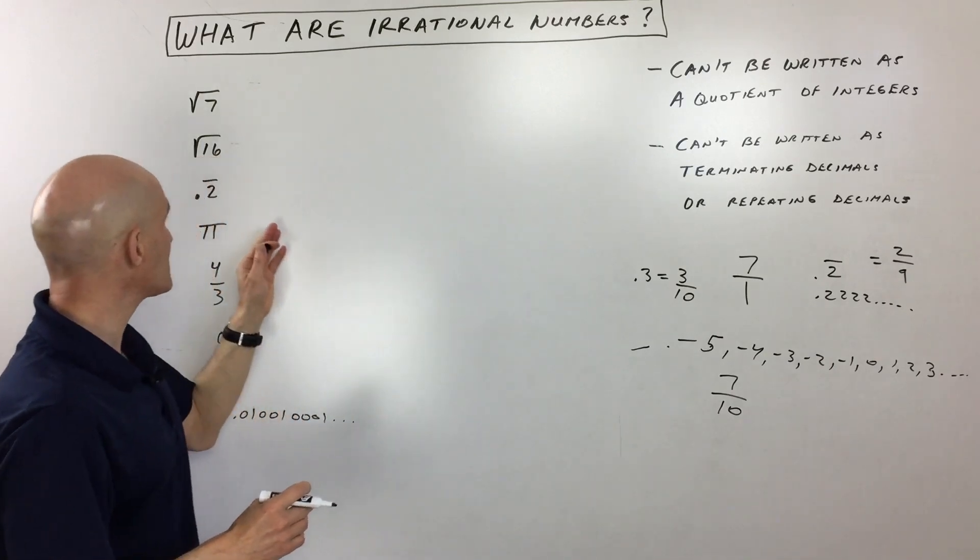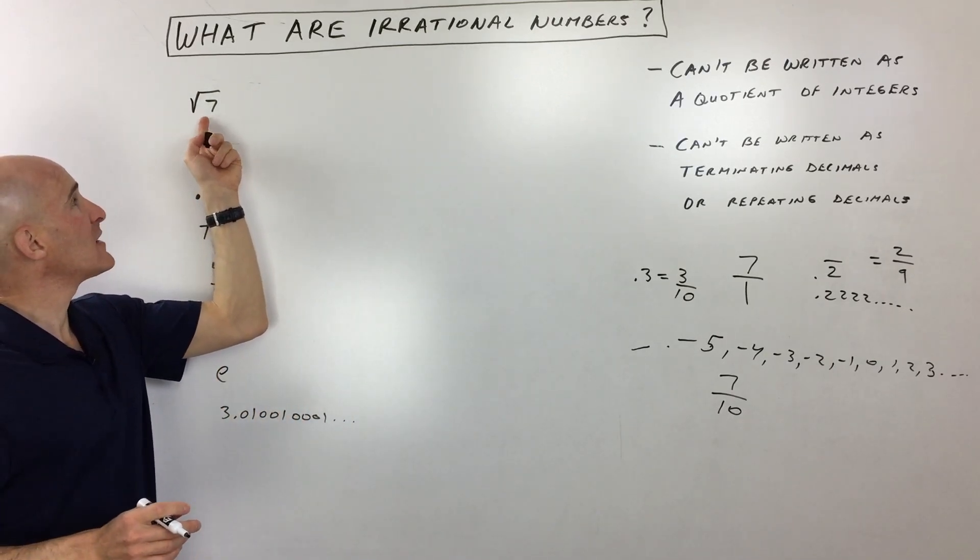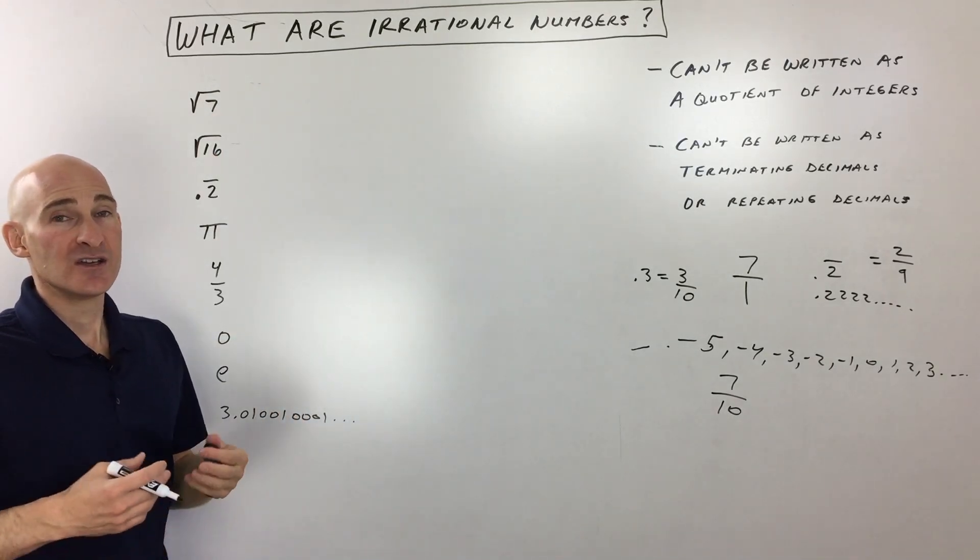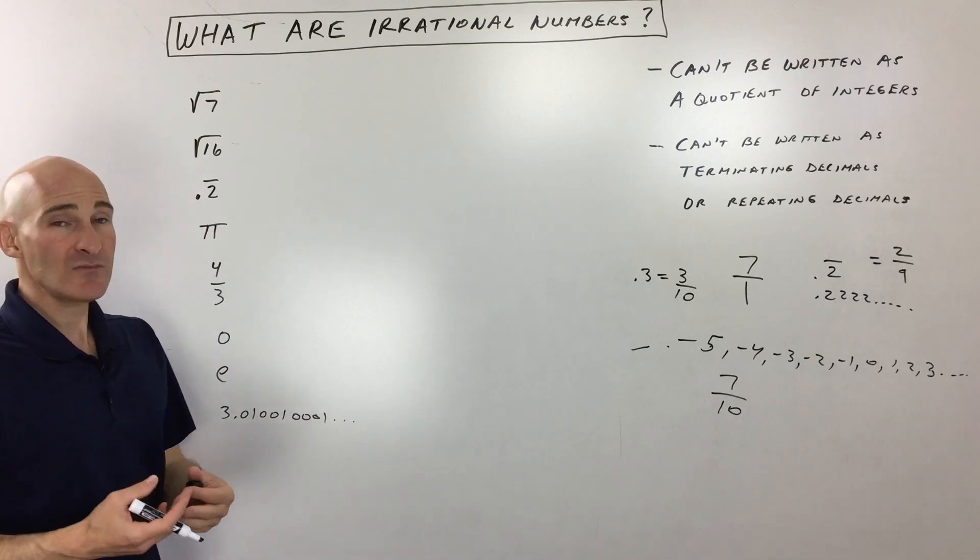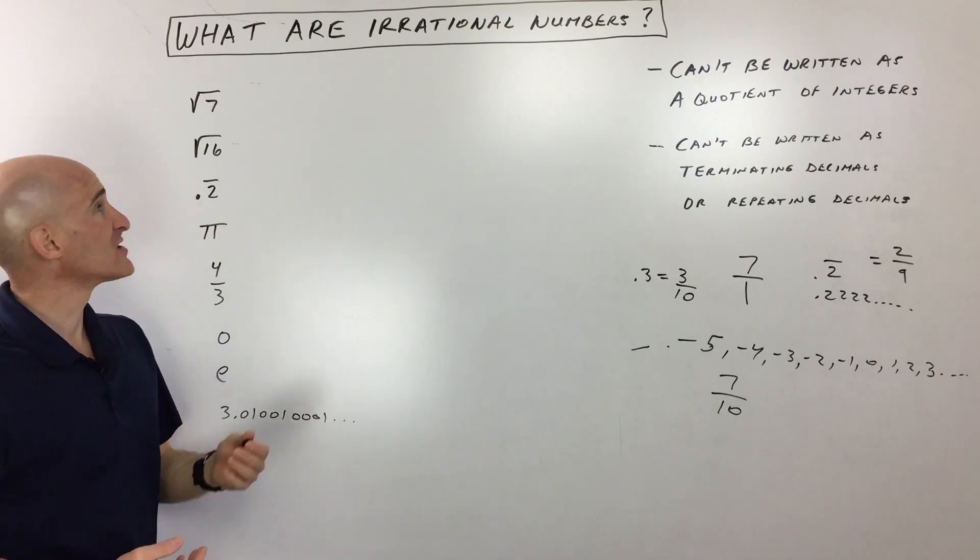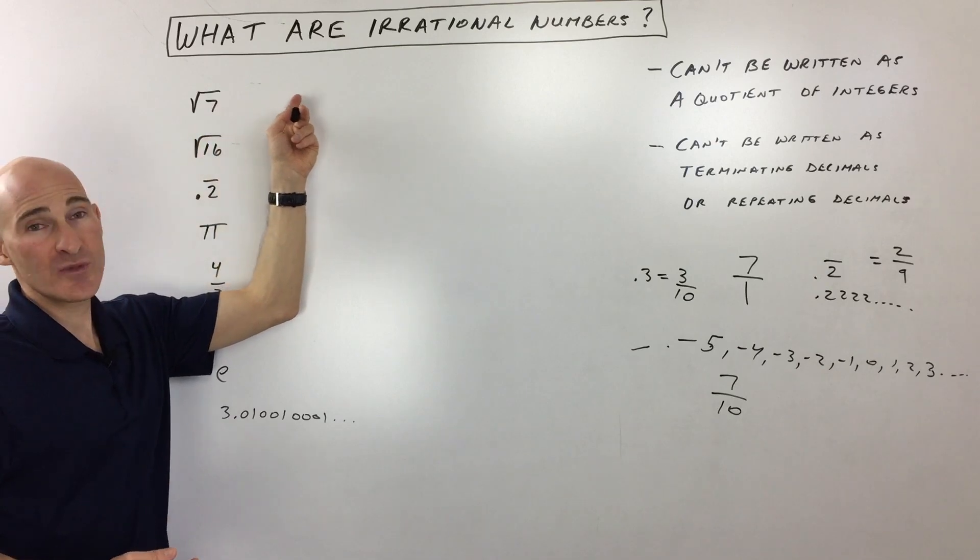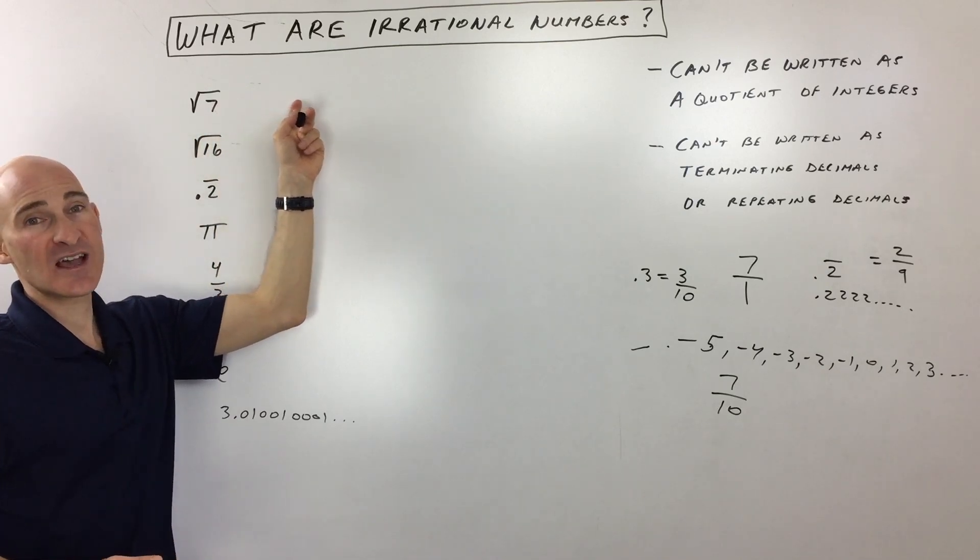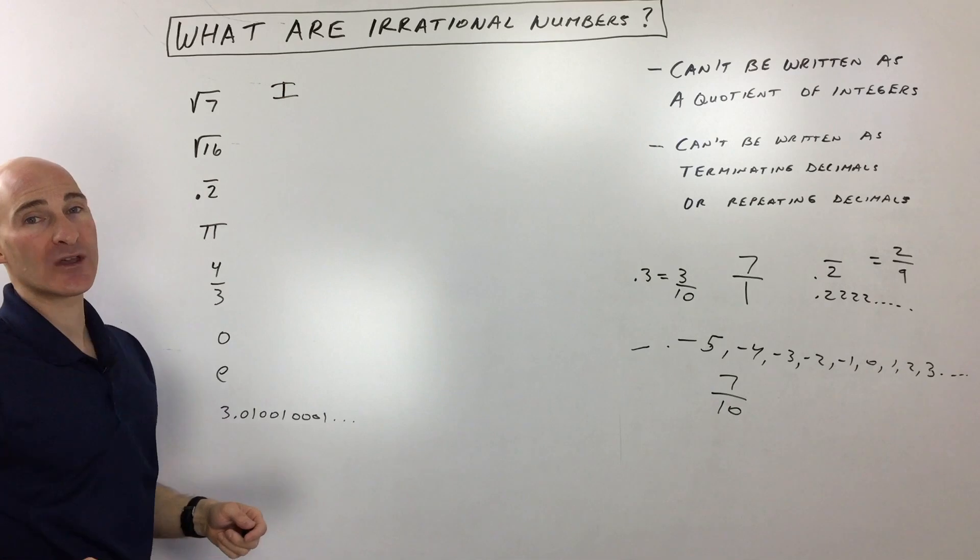So with irrational numbers, let's take a look at some examples, see if we can classify these. So say, for example, the square root of 7. Okay, square root of 7, if we do that on our calculator, you're going to see that it's a non-terminating, non-repeating decimal. So this is actually an irrational number, okay?